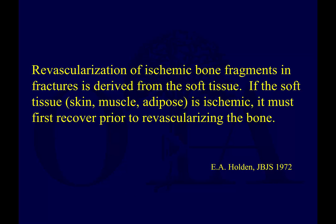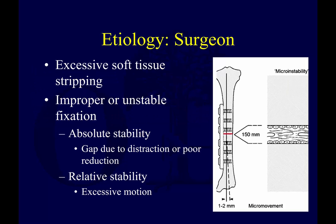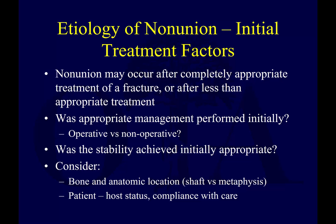Revascularization of ischemic bone fragments and fractures is derived from the soft tissue, so if the soft tissue is ischemic, it must recover first before you can revascularize the bone. Regarding non-union as a result of surgeon factors: at the initial surgery, excessive soft tissue stripping or improper and unstable fixation may cause problems — whether you create absolute stability with a gap, or relative stability with excessive motion.